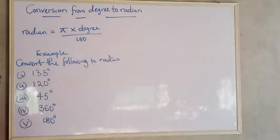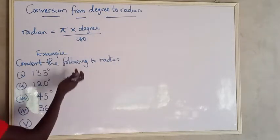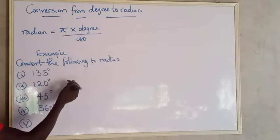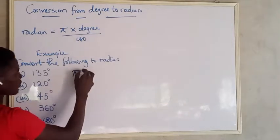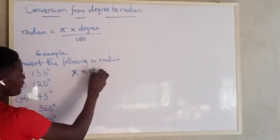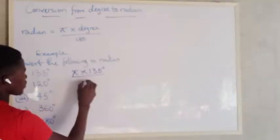So I want to convert 135 degrees to radian. So that's pi multiplied by 135 degrees divided by 180.